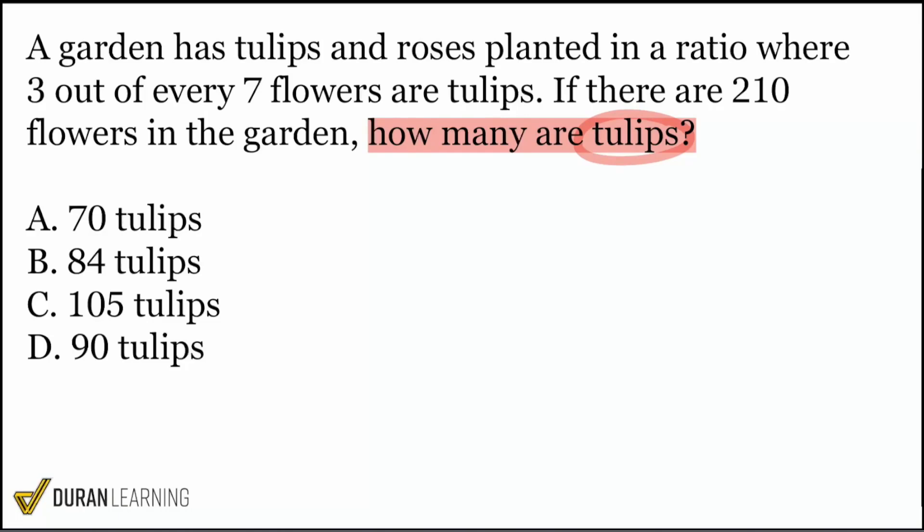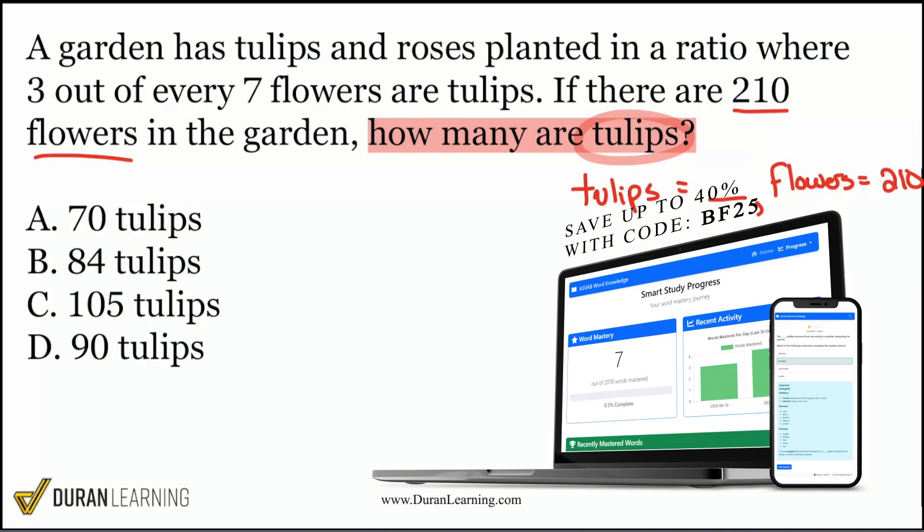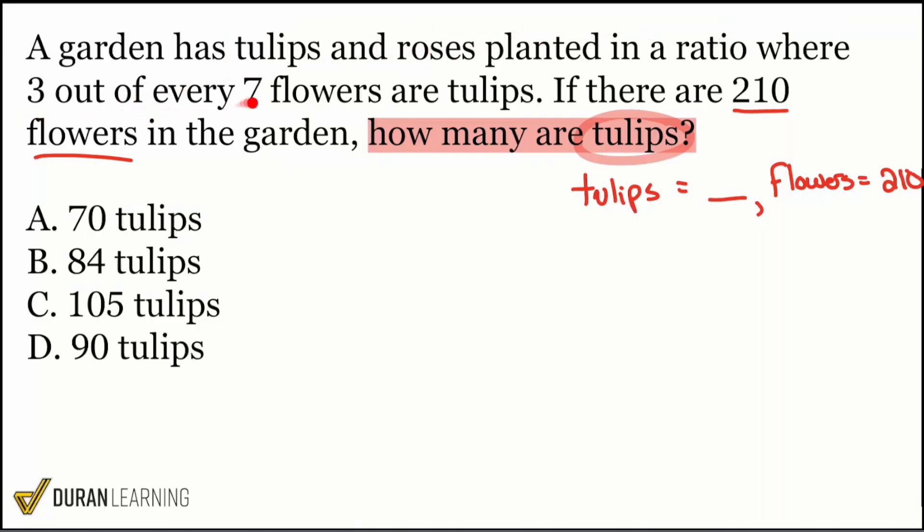So we want the number of tulips. Let's just go ahead and write that right here. And then here it says we have 210 flowers. So I'm just going to highlight that as well. So I'll just go ahead and say flowers equals 210. Okay, so with that, we know that we have two things being compared, tulips and flowers. And when we read the first sentence, take a look at this. It says a garden has tulips and roses planted in a ratio where three out of every seven flowers are tulips.